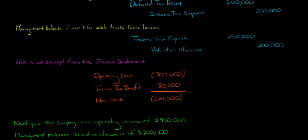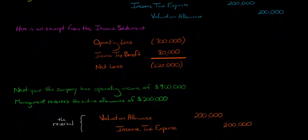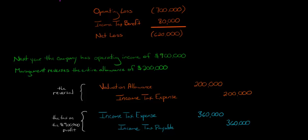Now I want to show you the reversal. Let's say that next year the company has operating income. They have a profit of $900,000. And so management says, things are looking a lot better than what we thought they were. So we're going to reverse the entire allowance of $200,000. We're going to need to make a couple journal entries. One is going to be just a normal entry. We had $900,000 in profit, so we multiply that by 40%. $900,000 times 40%, we have income tax expense of $360,000, income tax payable of $360,000.